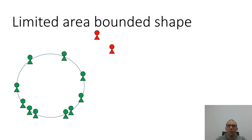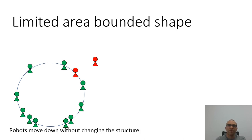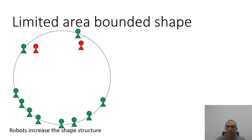Robots can move up, down, right, and left. They can actually increase or decrease the size of the shape depending on the task, ignoring the Byzantine robots. In both cases, the honest robots can detect and ignore the Byzantine robots, and the Byzantine robots cannot influence the structure.